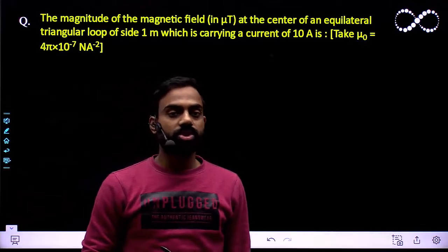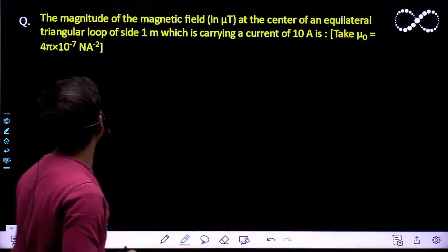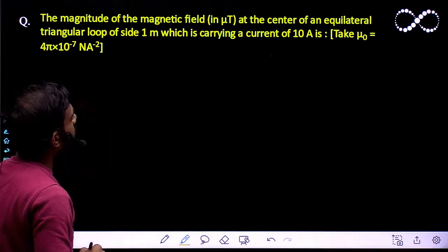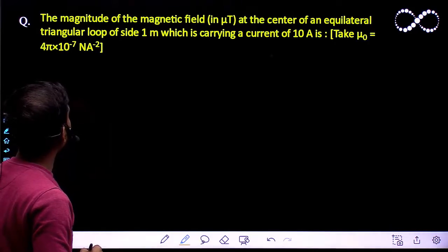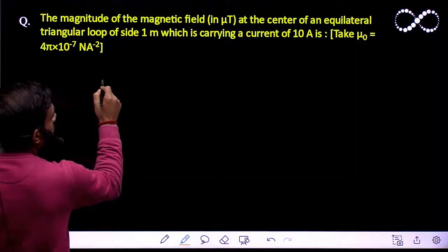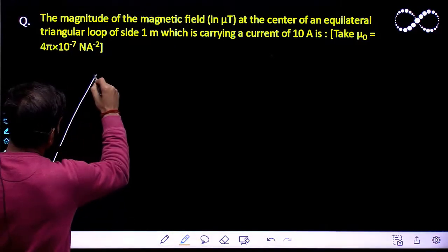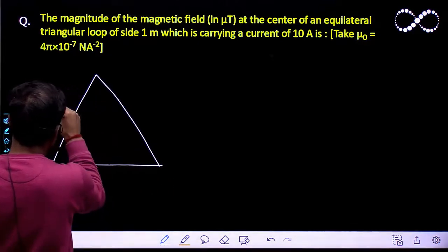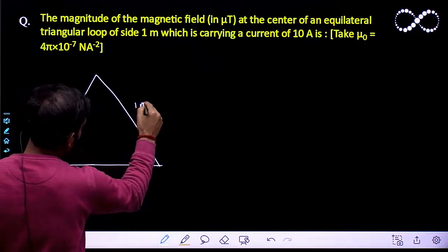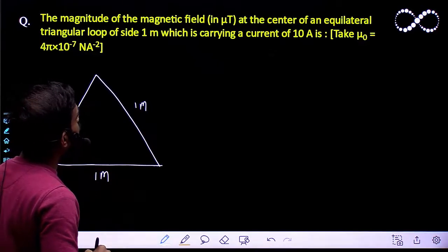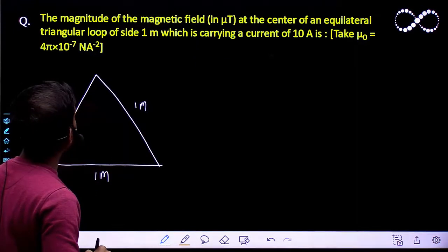Hello students, let us see this question. The magnitude of magnetic field at the center of an equilateral triangle loop of side 1 meter, carrying current 10 amperes. This is the equilateral triangle and the length of each side is 1 meter. We have to find the magnetic field at the center.